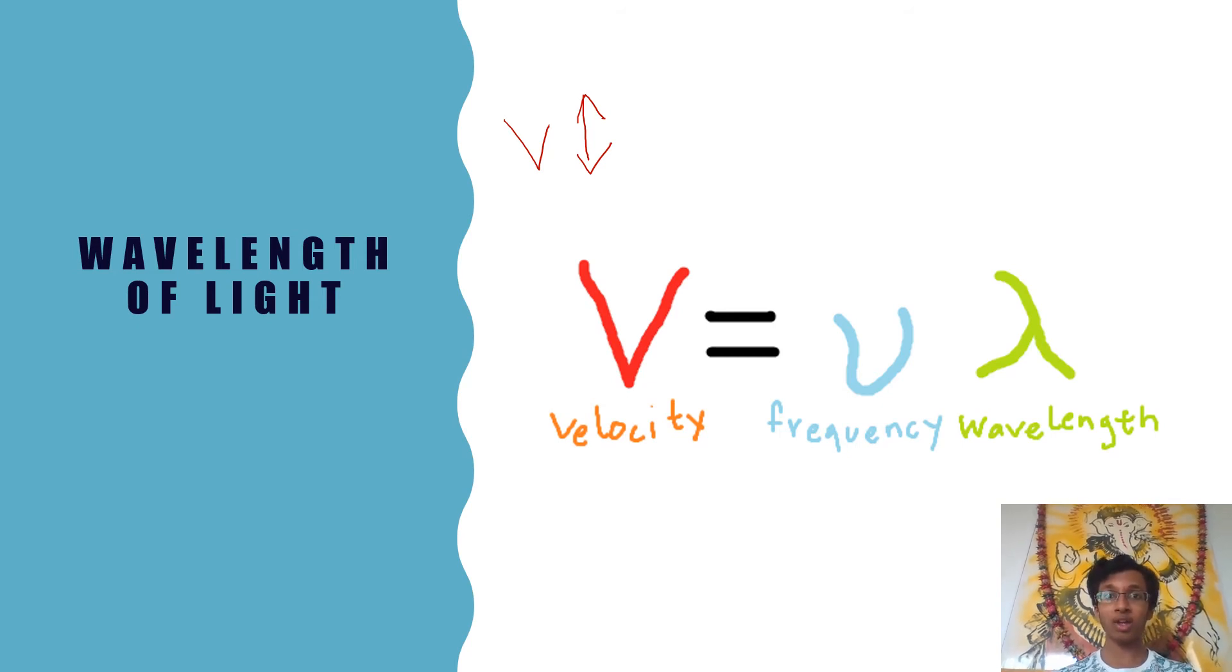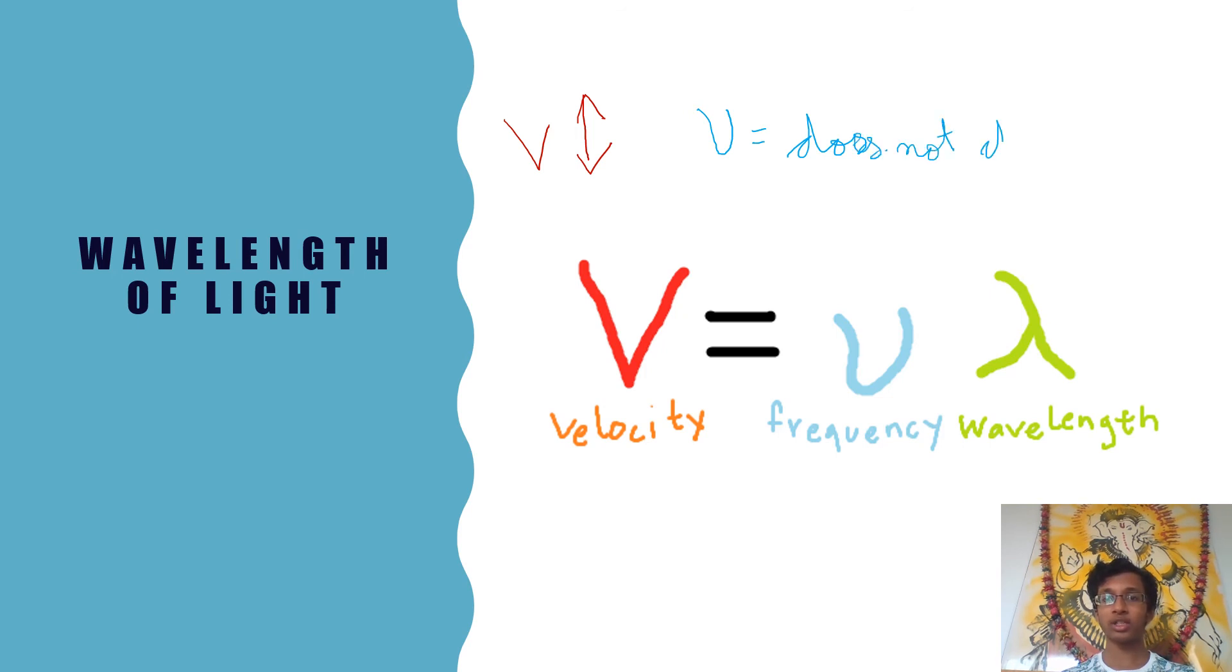After all, light depends on frequency and wavelength. However, refraction does not change the color of light. This is because the frequency of light does not change, and frequency is actually the factor that determines the color of light. So our frequency nu does not change.